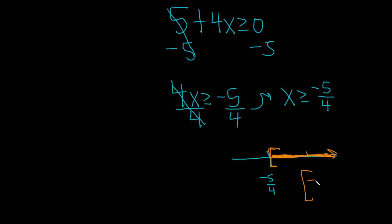It would be bracket negative 5 over 4, comma, infinity. And that, my friends, would be the domain of this function. Good luck.